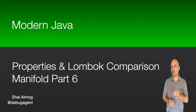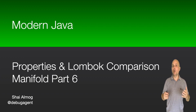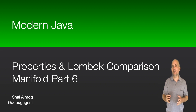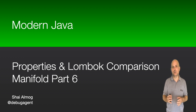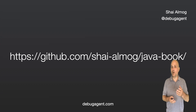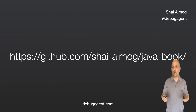Hello everyone and welcome to the modern Java course. Up until now we covered features that are mostly unique to Manifold. Today we will talk about Manifold's properties support, which is very similar to the core feature of Lombok. I think this demonstrates the core philosophical differences between these two projects. The code for this and the other videos in this series is available on my GitHub page, so check it out and follow me on GitHub.